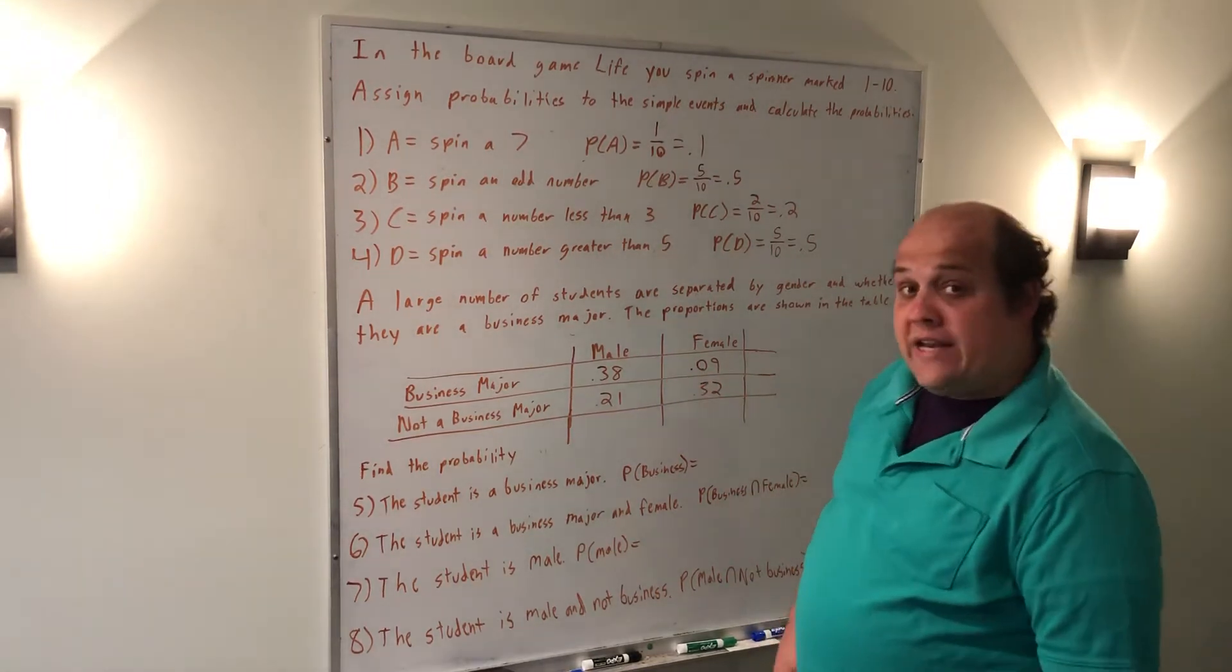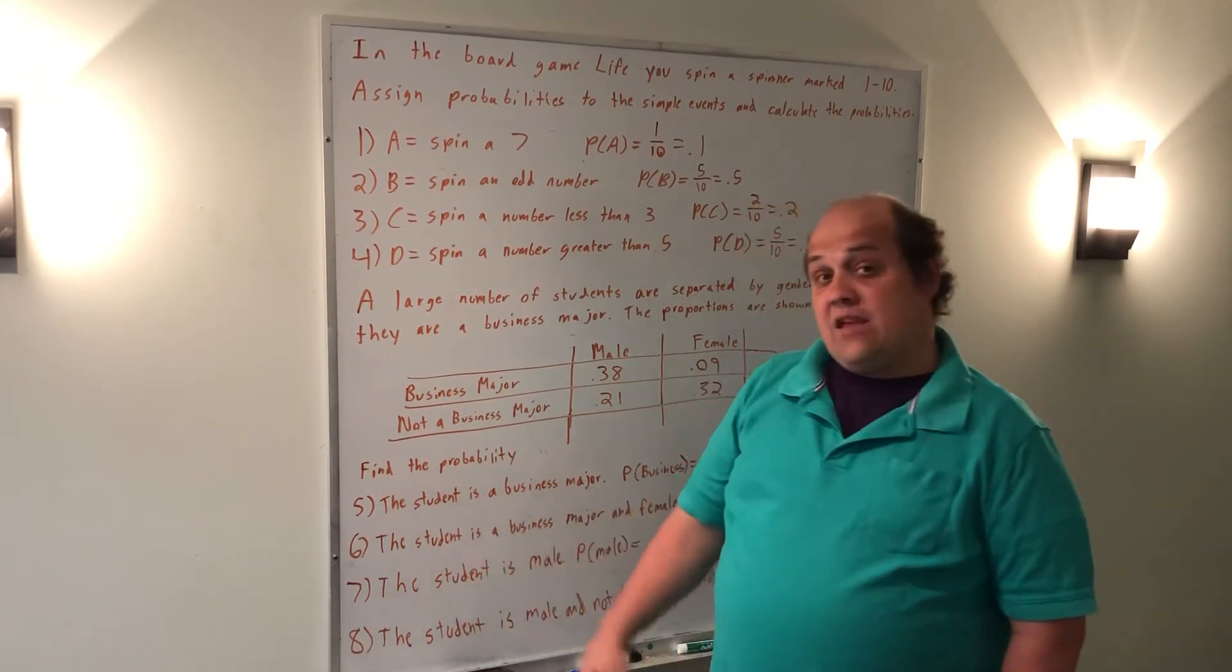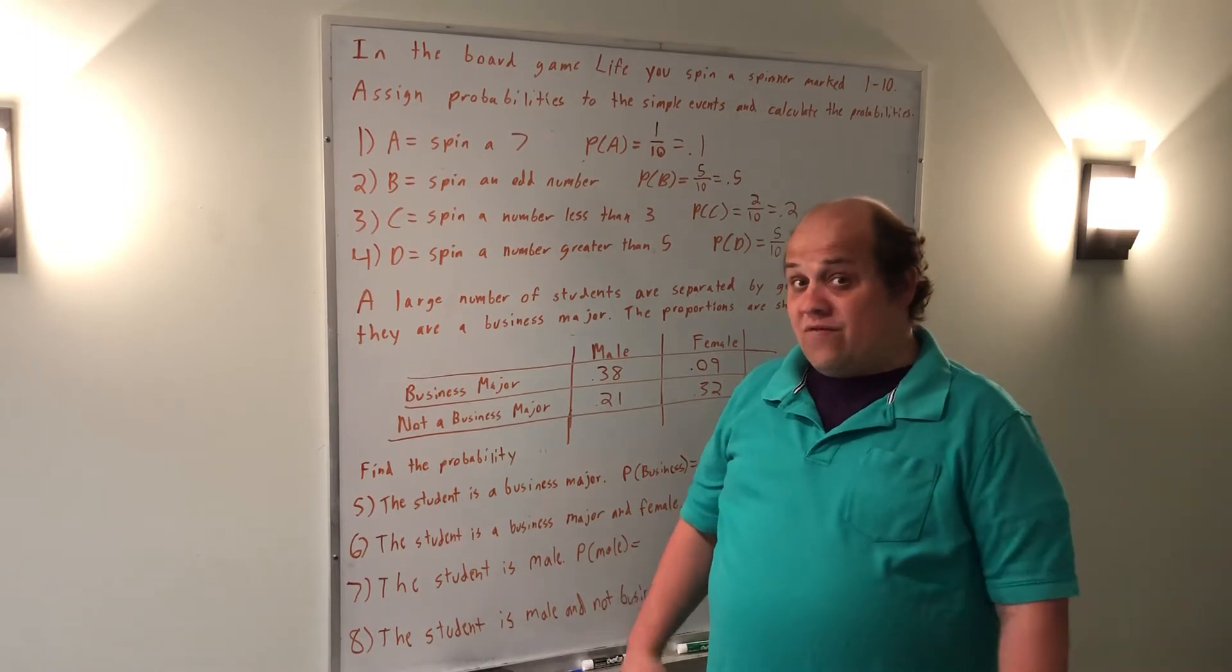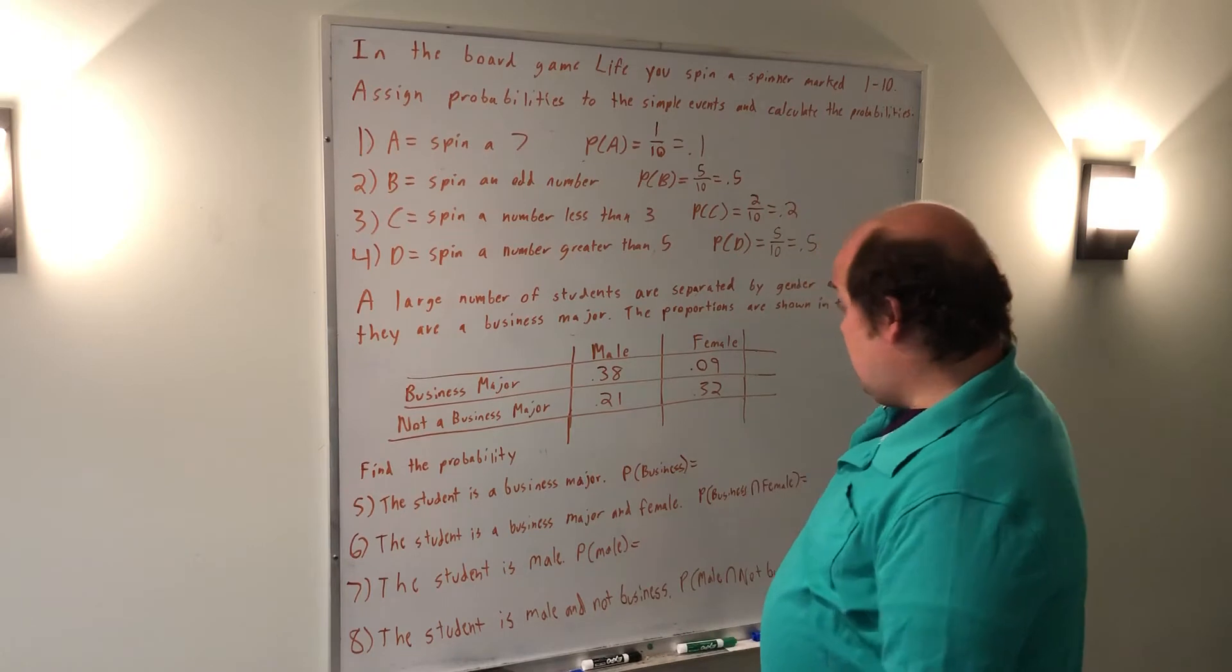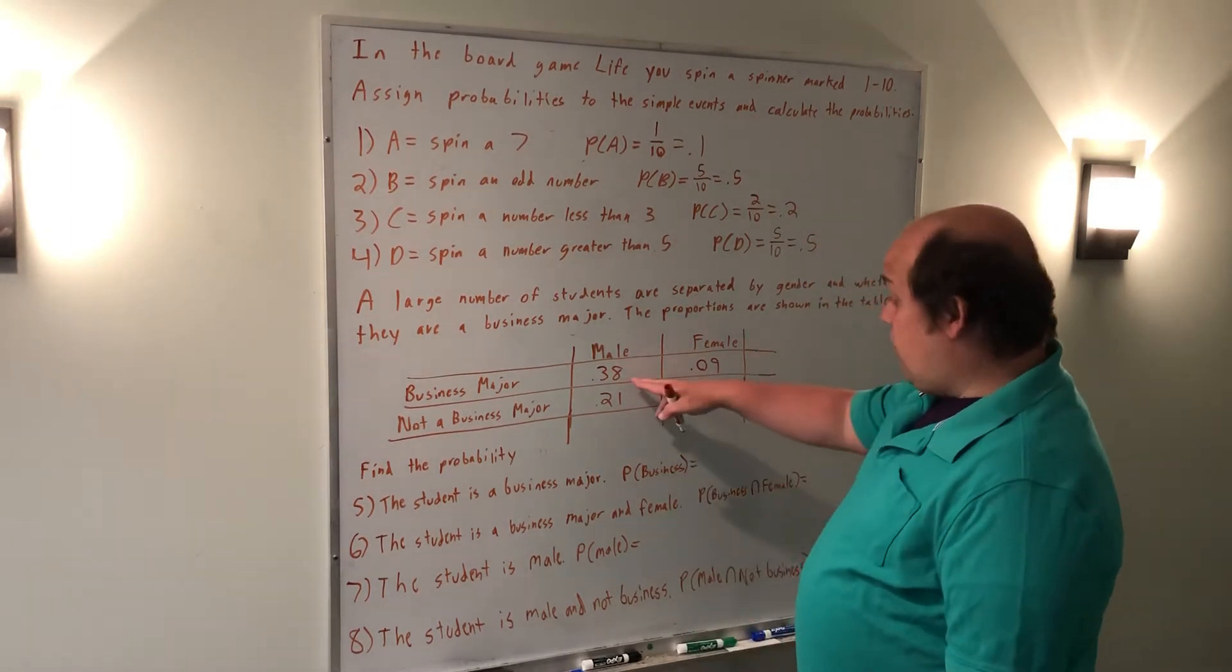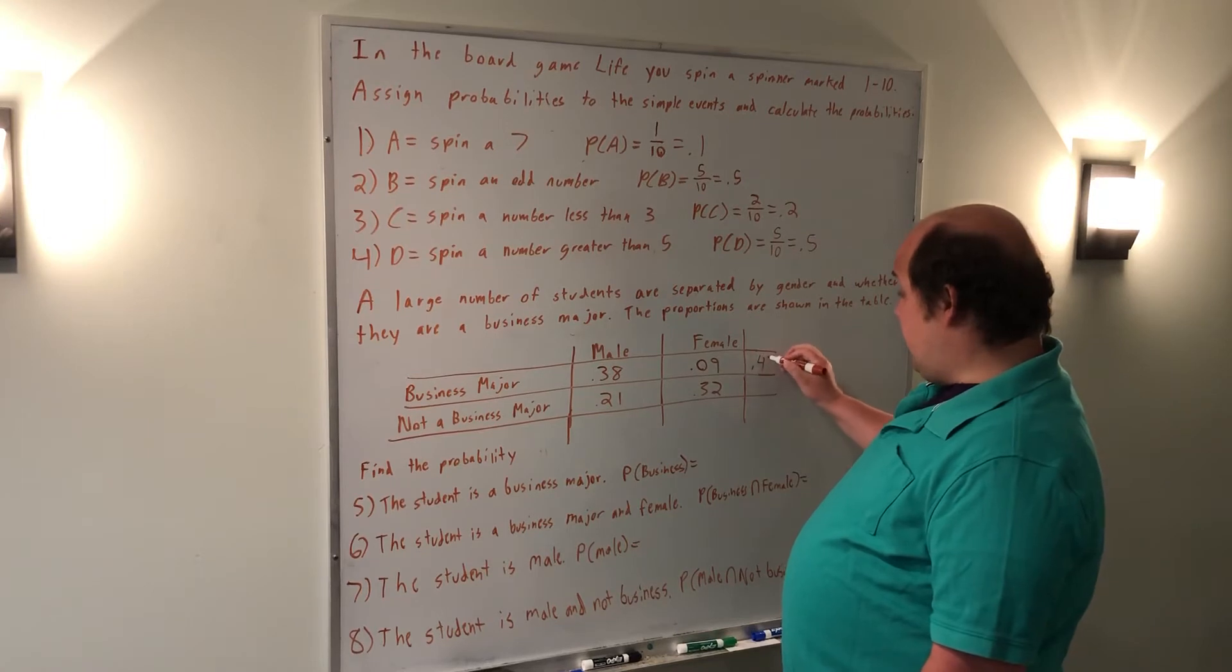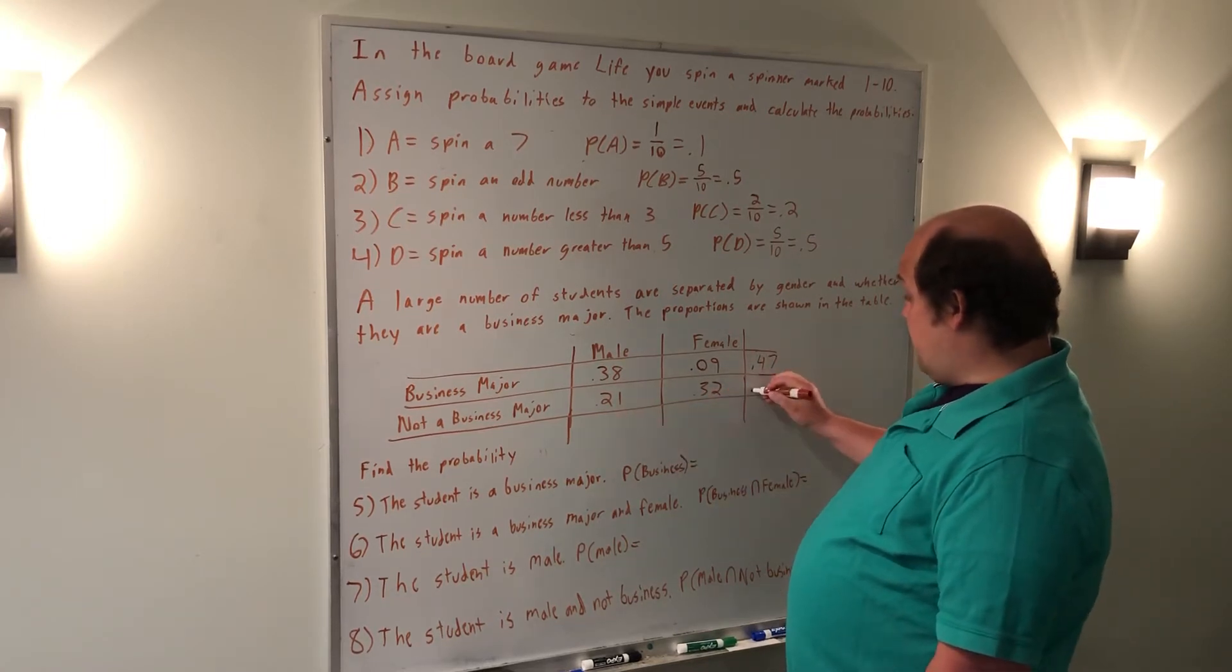The next question is from a two-way table. There's two different ways these tables can be shown to you - either they can give you the proportions or they can give you the raw numbers. In either event, you're probably better off finding totals. So I would start out by saying the row total is 0.38 plus 0.09, which gives me 0.47. 0.21 plus 0.32 gives me 0.53.